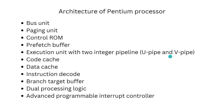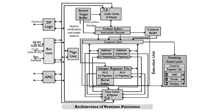Now let's see the architecture of the Pentium processor. The various functional units are as follows: Bus unit, Paging unit, Control ROM, Prefetch buffer, Execution unit with two integer pipelines (U-pipe and V-pipe), Code cache, Data cache, Instruction decode, Branch target buffer, Dual processing logic, and Advanced Programmable Interrupt Controller. The bus unit sends control signals and fetches code and data from external memory and I/O devices with a 64-bit external data bus.